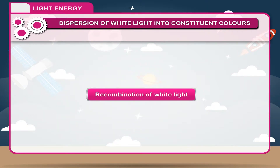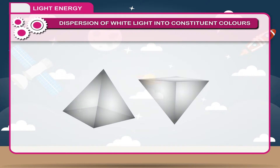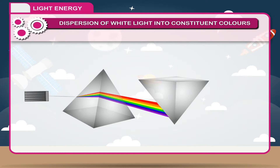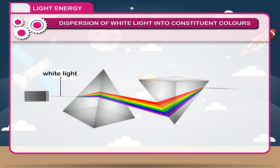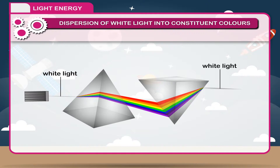Recombination of white light: Take two identical prisms and place one prism in a straight position. Allow a narrow beam of white light to pass through it — it splits into its constituent colours. Place another prism near the first one in such a way that its position is opposite to the first one. Allow the band of split light to pass through it. The coloured band again joins and forms white light.